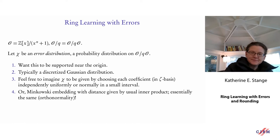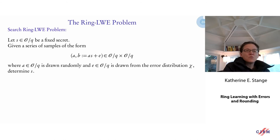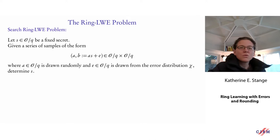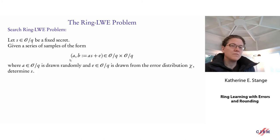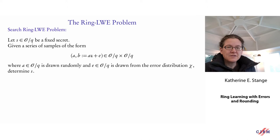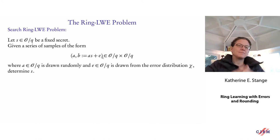In Ring LWE, instead of multiplying by a matrix, I multiply by an element of the ring. A sample looks like: choose a randomly from the ring, compute b = a·s + e where e is short, and give (a, b) to you. The secret s and the error e are short. Given a bunch of these ordered pairs of ring elements, you must determine s.